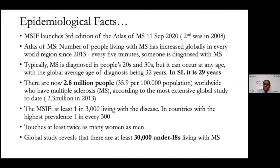MS typically affects people in the age group of 20 to 30, but it can occur at other ages, including in children. The global average age of onset is around 32, but in Sri Lanka it is around 29 years for initial symptoms. Overall, there are about 2.8 million people affected by this disease globally, an increase compared to the 2013 MS Atlas figures.